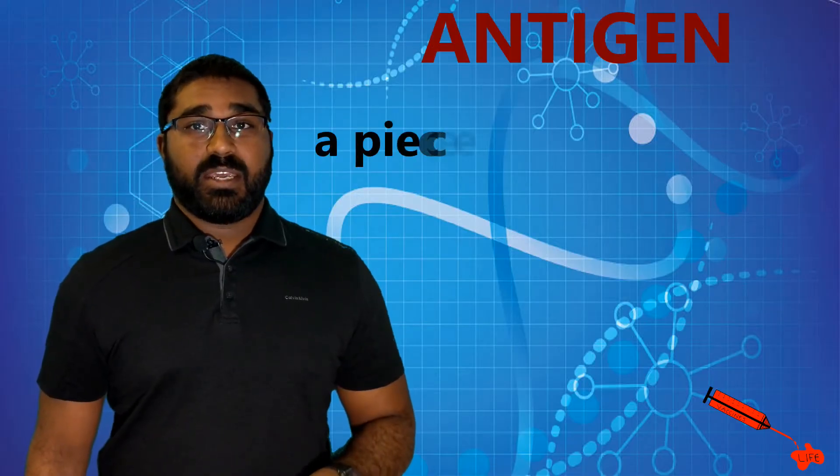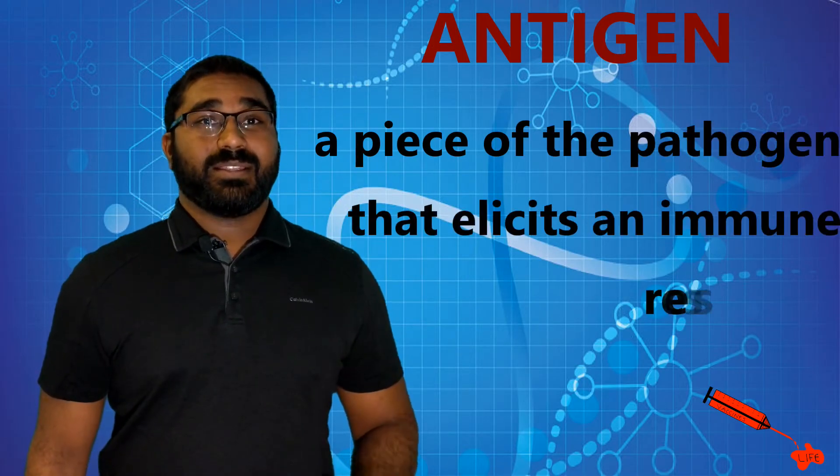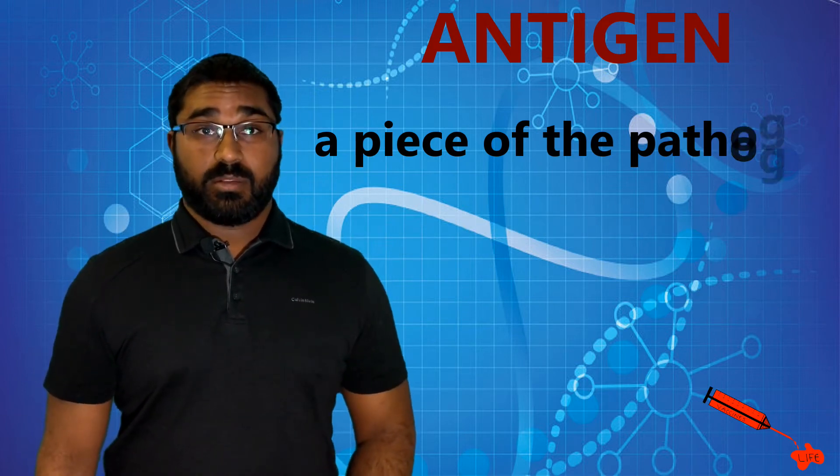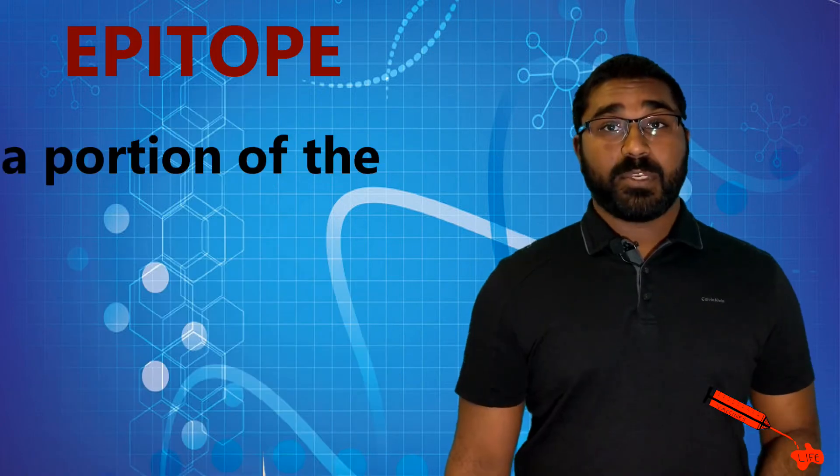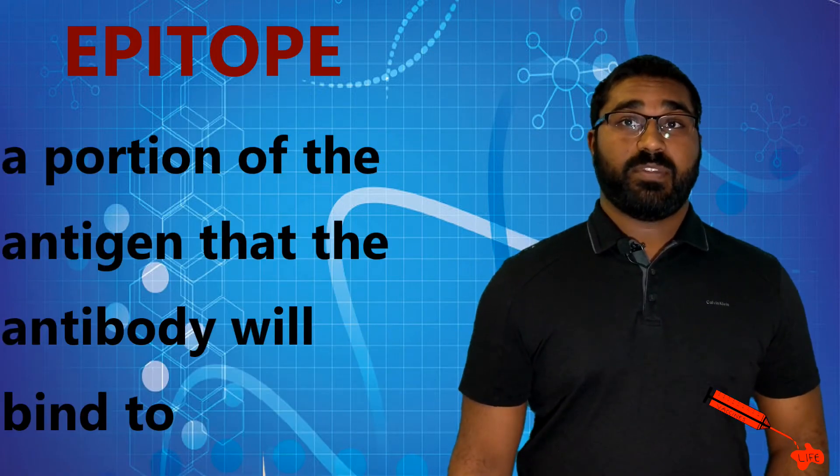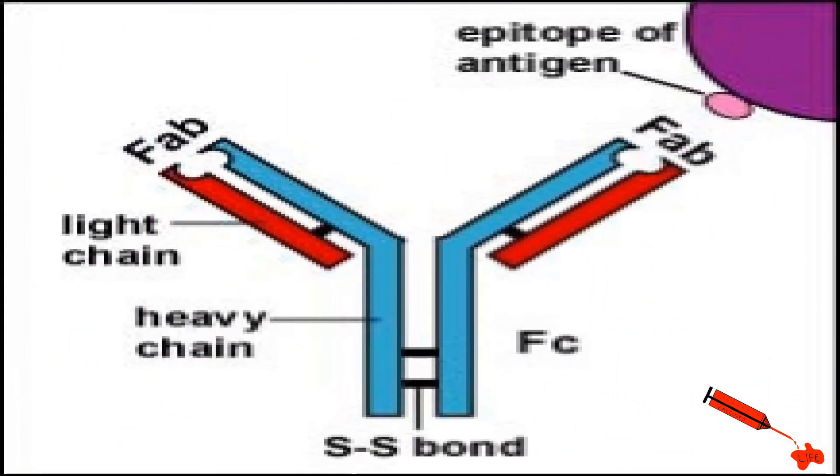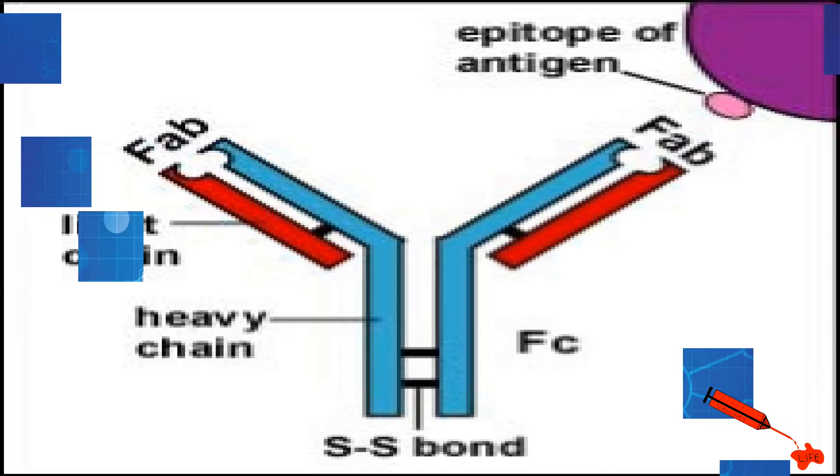An antigen is a piece of the pathogen that elicits an immune response. Usually it's a protein, but it can be a sugar as well. It depends. And an epitope is a portion of the antigen that the antibody will bind to. This is important because just because an antibody binds to the antigen does not mean it will neutralize the pathogen. It needs to bind to the correct epitope.